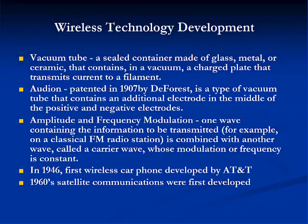The development of wireless technology was marked by, first, the early vacuum tube — a sealed container made of glass, metal, or ceramic that contains, in a vacuum, a charged plate that transmits current to a filament. Then came the audion, patented in 1907 by Lee de Forest, a type of vacuum tube with an additional electrode in the middle of the positive and negative electrodes. Then amplitude and frequency modulation were developed, in which a communication wave containing the information to be transmitted is combined with a carrier wave whose amplitude or frequency is maintained constant. We will explore AM and FM transmission much more in Module 6.